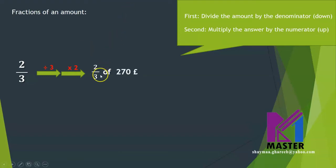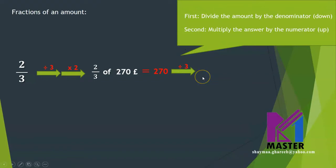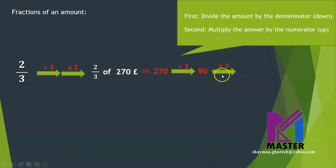Let's see by example: two thirds of 270 pounds. First, find one third by dividing the amount by the denominator, which is three. 270 divided by three: 27 divided by three equals nine, so 270 divided by three equals 90. Now multiply the 90 by the numerator, which is two. 90 times two: two times nine equals 18, so 90 times two equals 180 pounds.